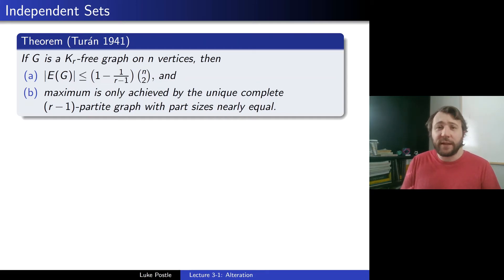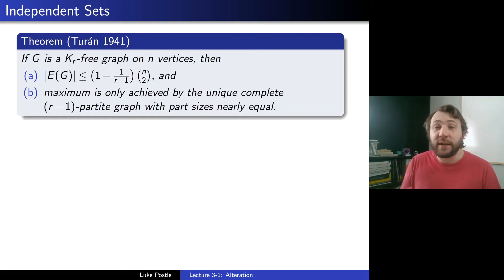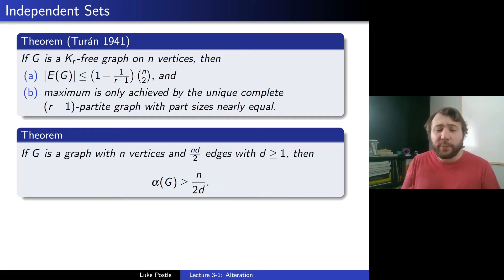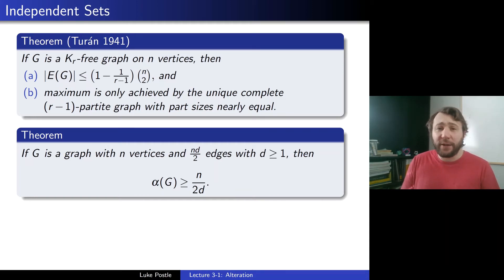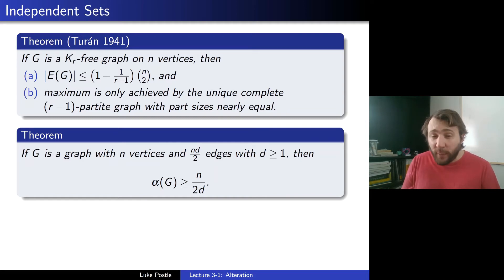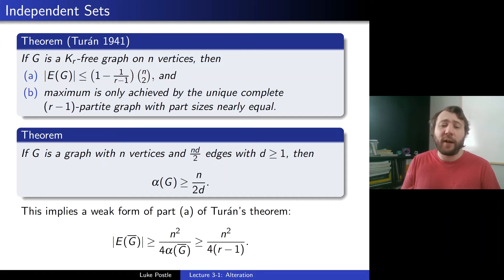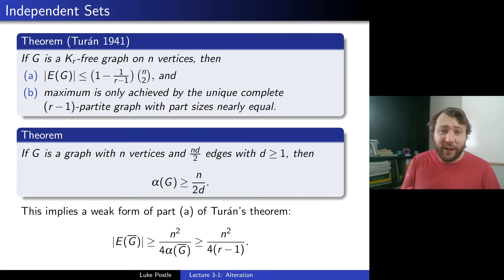There's a probabilistic proof of Turán's theorem, but I'll do a weaker version. We can prove: if G is a graph with N vertices and ND/2 edges with D at least 1, then α(G) is at least N over 2D. Using probabilistic methods more carefully, one can actually show N over D+1, but here we'll just do 2D. This implies a weak form of Turán's theorem. If we had the D+1 bound, we'd recover the full theorem.